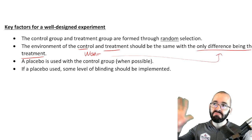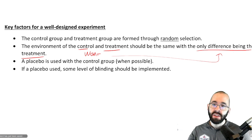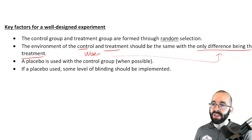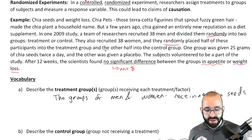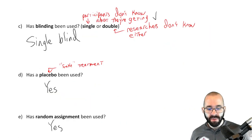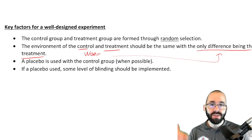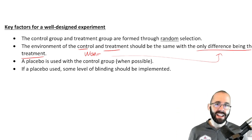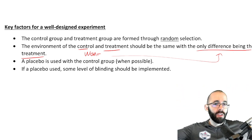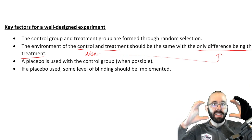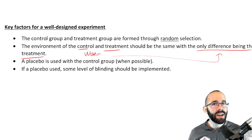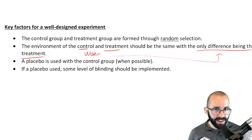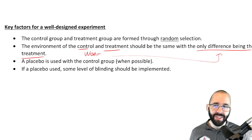That's basically it for experiments and observational studies. We got a good overview in the last video; this video we went more in depth on vocabulary for experiments and saw them in an example. In the next video, we'll talk about different ways of actually taking samples — the population is the whole thing, we usually can't look at that, so we look at a sample. How do we choose who's in that sample? Stay tuned!